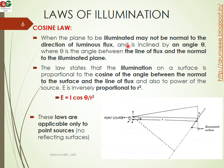When the plane to be illuminated may not be normal to the direction of the luminous flux, it is inclined by an angle theta, where theta is the angle between the line of the flux and the normal to the illumination plane. The cosine law states that the illumination on a surface is proportional to the cosine of the angle between the normal to the surface and the line of the flux, and also to the power of the source. E is inversely proportional to r squared.